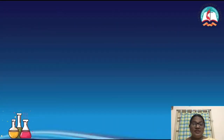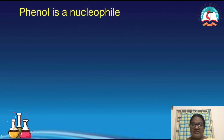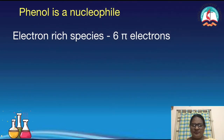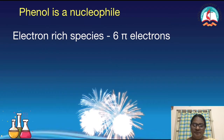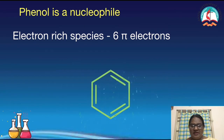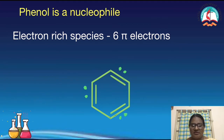Today we are going to see the electrophilic substitutions of phenol. Before that, we will understand why it undergoes this. Phenol is a very good nucleophile. Electron-rich species are called as nucleophiles. We know in phenol, just like a benzene ring, there are six pi electrons. Each double bond contains pi electrons, which are equally distributed among the three bonds. So that is why it can attract electrophiles, which are electron deficient.